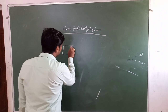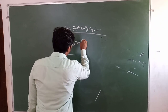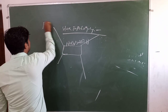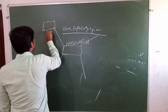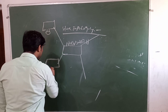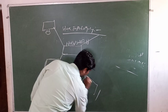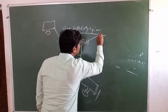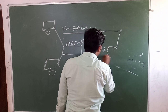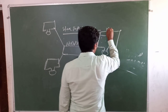Looking at the diagram of star topology, we can see the hub and switch. Every computer or workstation is connected to the star topology through a hub and switch. Without a hub and switch, star topology cannot function. Every computer is connected to the hub and switch as nodes or terminals.